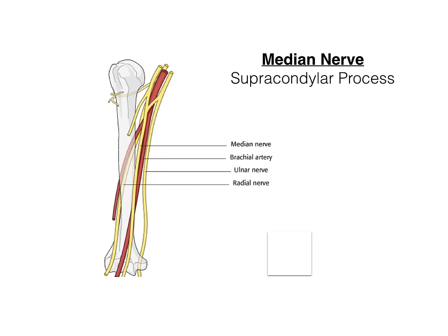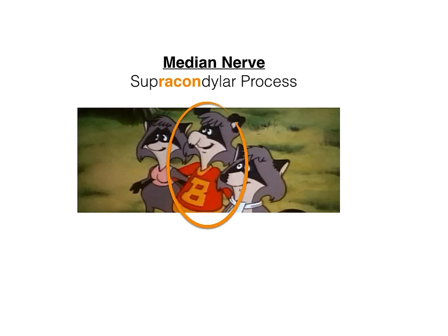The next nerve is the median nerve, which is much simpler. It courses down off the brachial plexus straight down and crosses the center region of the distal humerus over the supracondylar process. To remember this, think of three raccoons from a movie — circle the middle one. Middle for median, and raccoon sounds like 'racon,' which is hidden in the word supracondylar — highlighted there for you.